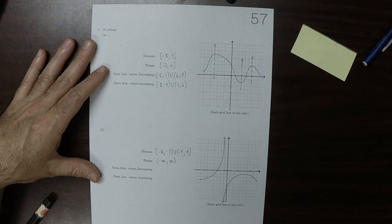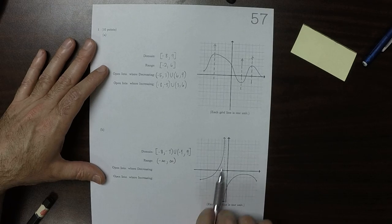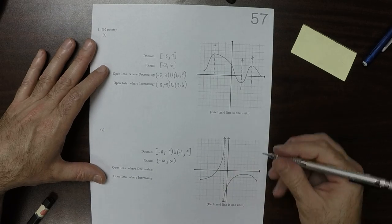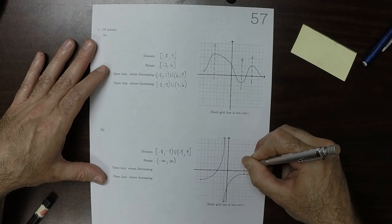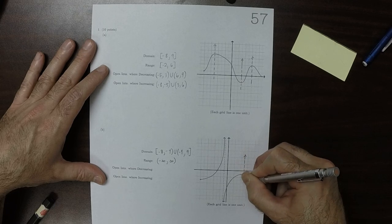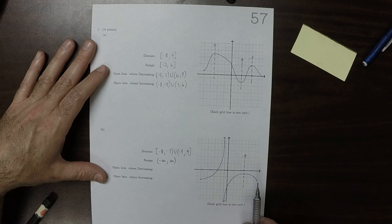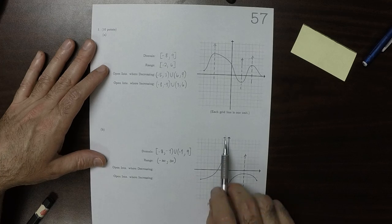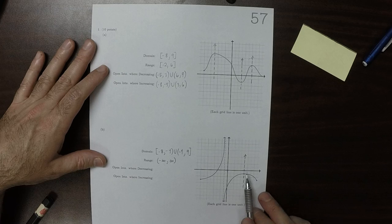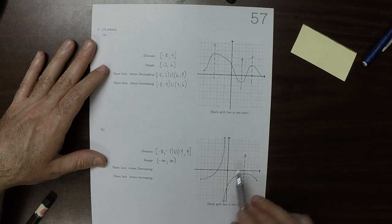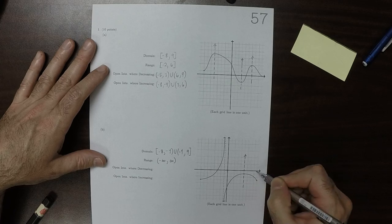The open interval is where it is decreasing. So there, that whole piece is increase, and then here you can see that the function changes its behavior. So where is it decreasing? So that's an increasing piece, increasing, increasing, that's a decreasing piece. So that's from 5 to 9.